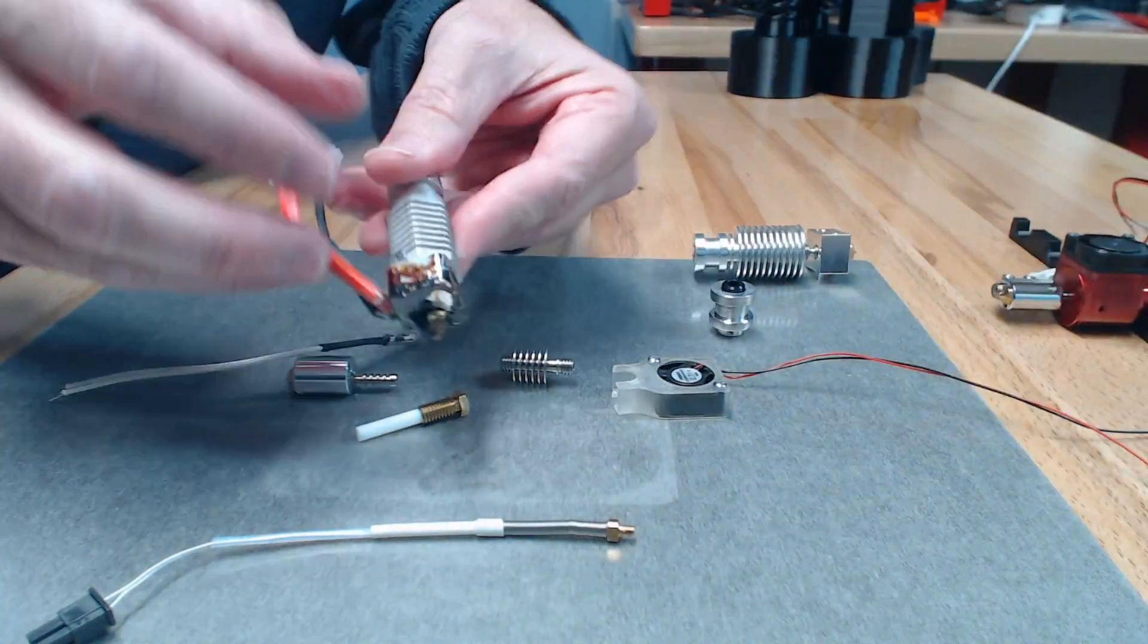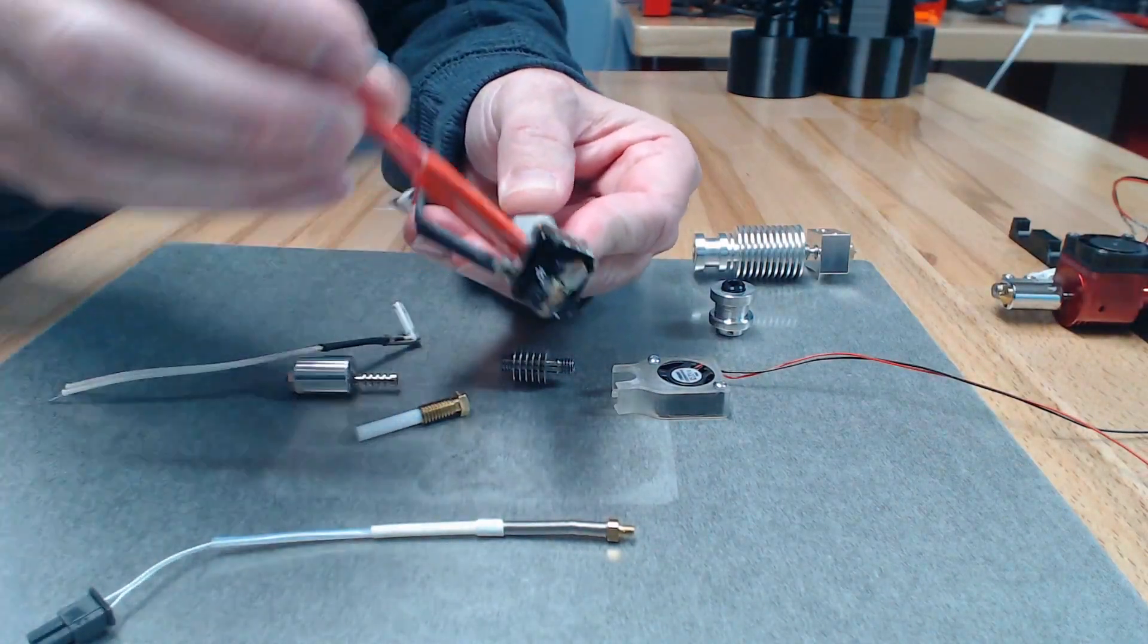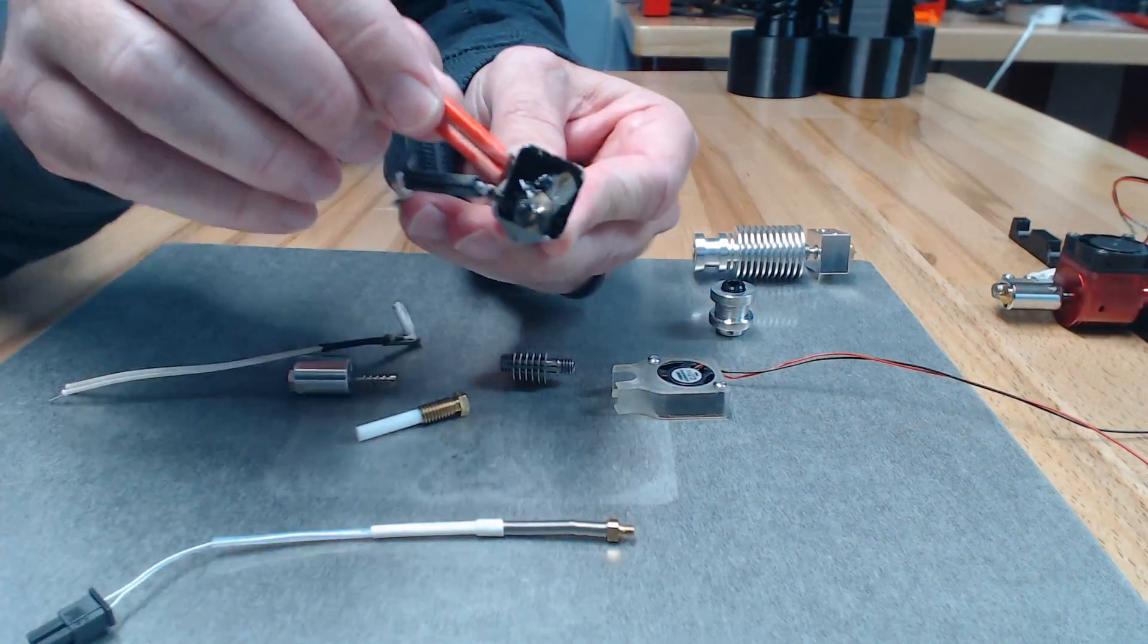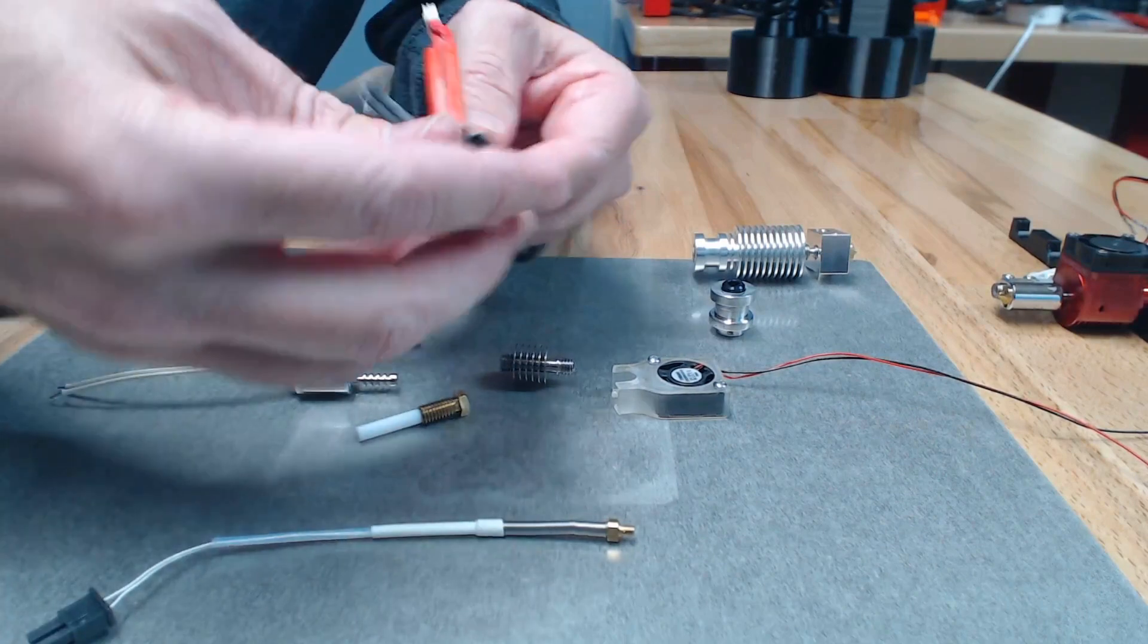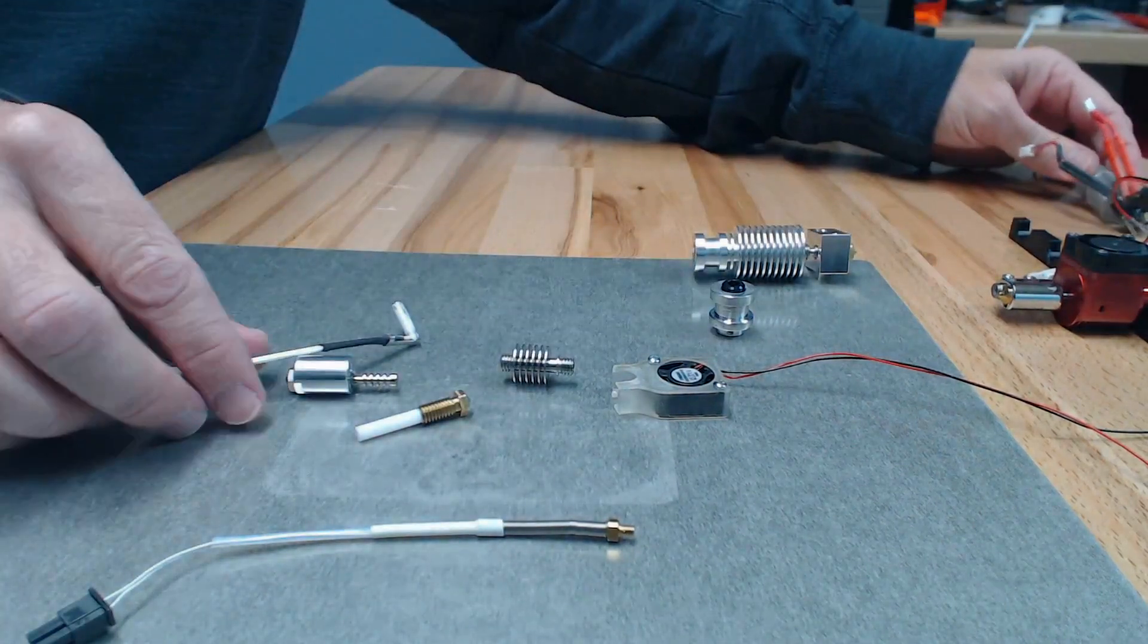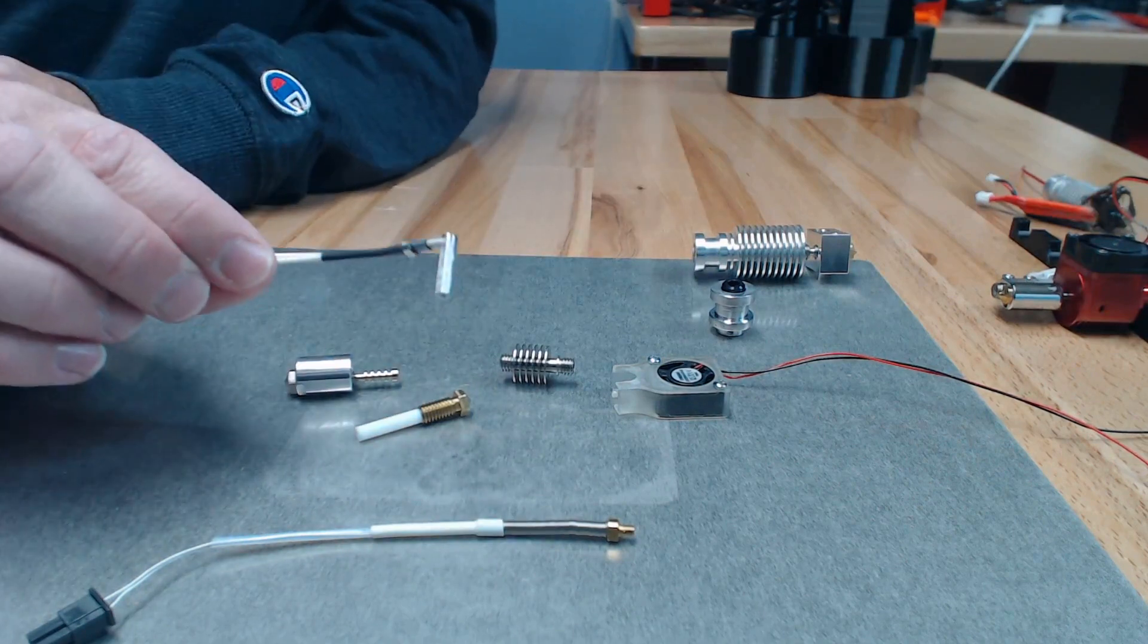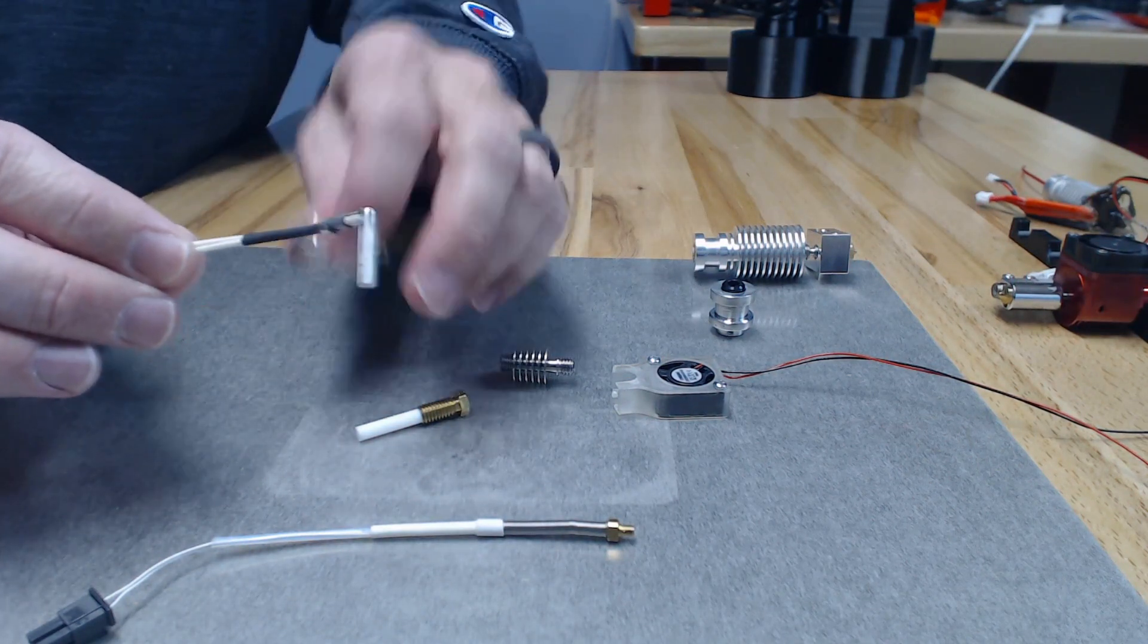For example, something like on this hexagon hotend, the first time I went to change my nozzle I actually broke the heater wire because as I was twisting the wires around just to get this out of the printer, that was enough to break it. So they've got this nice reinforced heater cable on the Pico Hybrid.